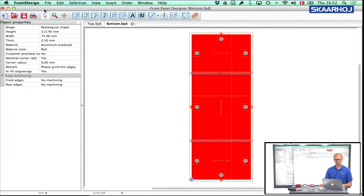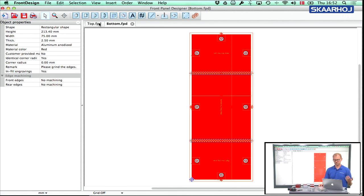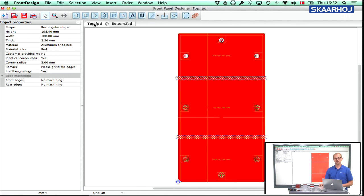But if you go back to the front panel designer itself, you'll see two panels, only two panels, the top panel and the bottom panel. And that's exactly the files that I had ordered to make this box.